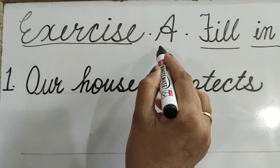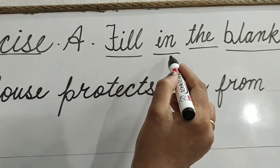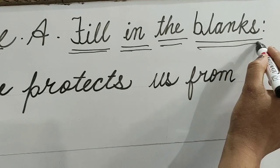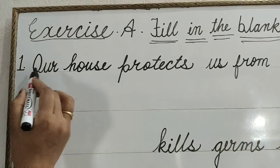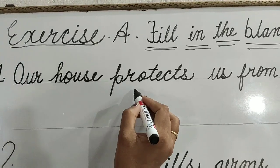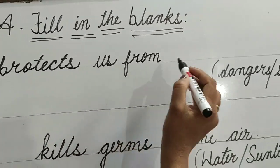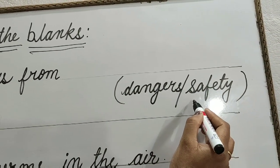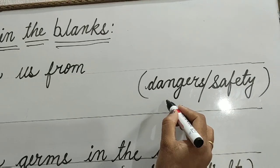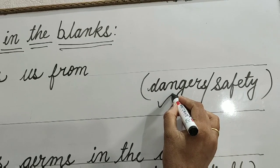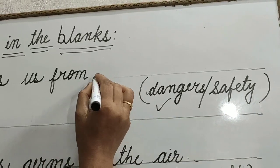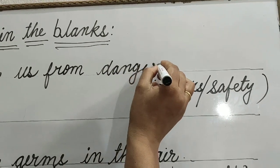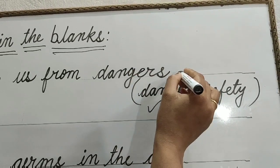Exercise A. Fill in the blanks. Question 1: Our house protects us from dash — dangers or safety. Dangers is the correct option. So we write down D-A-N-G-E-R-S. Dangers.